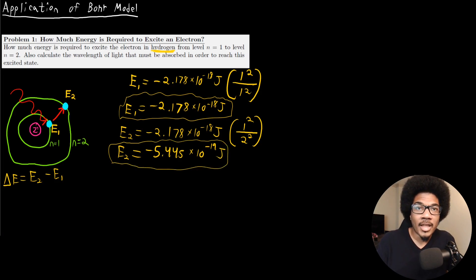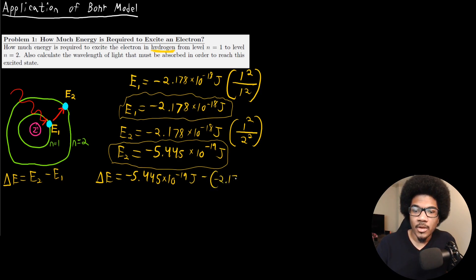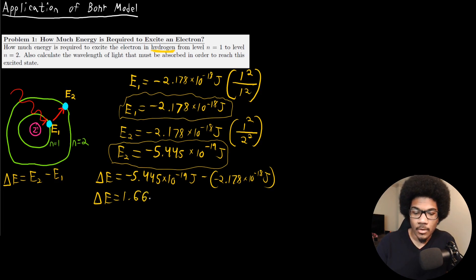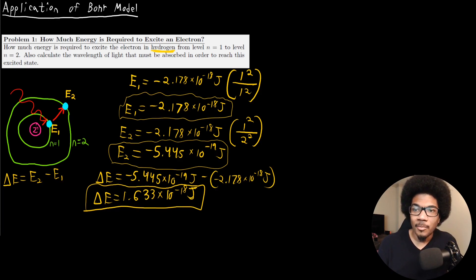Now the last thing we have to do to calculate the energy necessary to cause this excitation is get the Delta E. Delta E equals E2 minus E1: negative 5.445 times 10 to the negative 19 joules minus negative 2.178 times 10 to the negative 18 joules. Taking this difference, we get a Delta E of 1.633 times 10 to the negative 18 joules. This is the energy necessary to excite the electron from energy level n equals one to energy level n equals two.